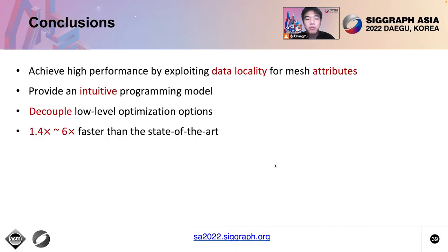To summarize, we present MeshTaichi, a new compiler to make mesh-based operations efficient. We achieve high performance by exploiting data locality for mesh attributes. Specifically, we partition meshes into patches and transfer wanted attributes for each patch to on-chip memory, so that mesh-based operations can access the data faster. Our compiler provides an intuitive programming interface where users can write concise code without worrying about mesh relations and attribute indices. Our compiler also decouples low-level optimization options from computation, enabling users to explore different data orderings and cached attributes without changing the computation. As a result, our CPU solution is an order of magnitude faster than CIMIT, and our GPU solution is 1.4 to 6 times faster than RxMesh.